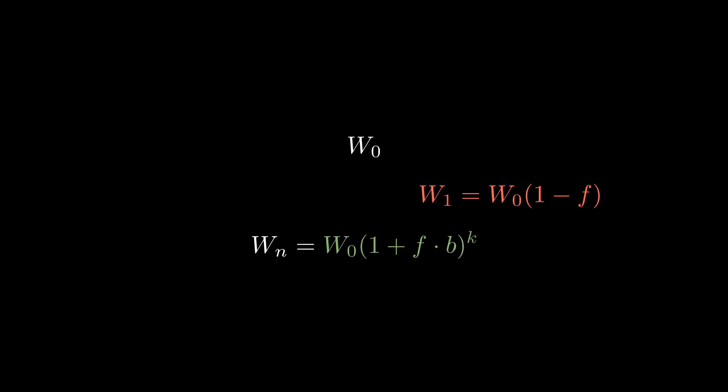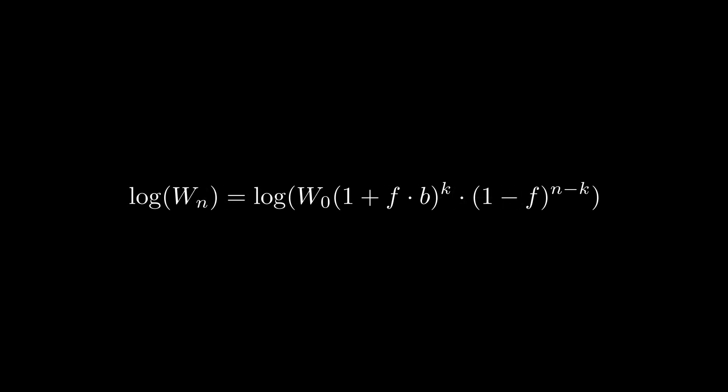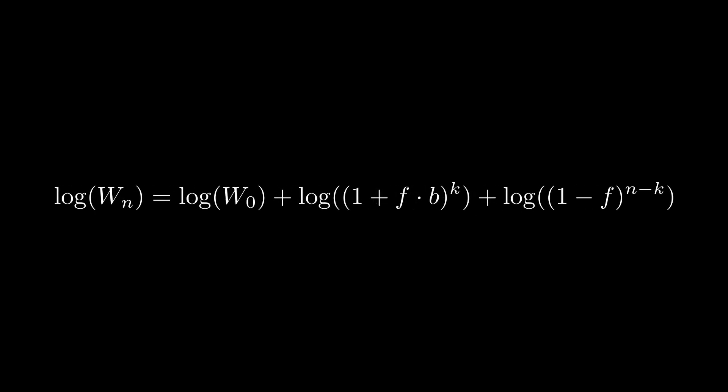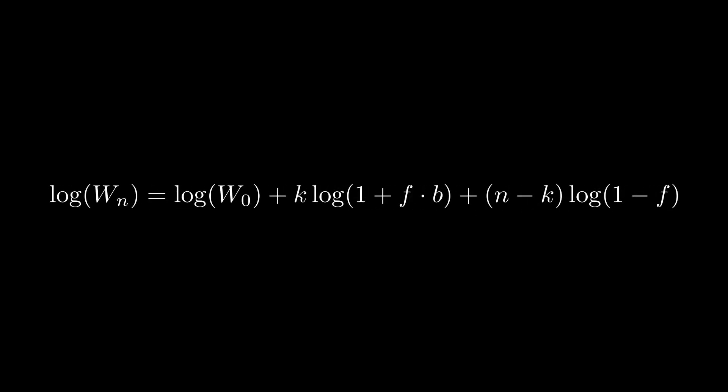For the general case of repeated scenarios involving the same chance, defining our total runs by n and the amount of times we win by k, this combined formula would give us our net worth at the end of the day. To assure long-term growth, we want to maximize the logarithmic growth rate of this total win. So applying the logarithm on both sides and simplifying this equation a bit will give us the baseline for that.